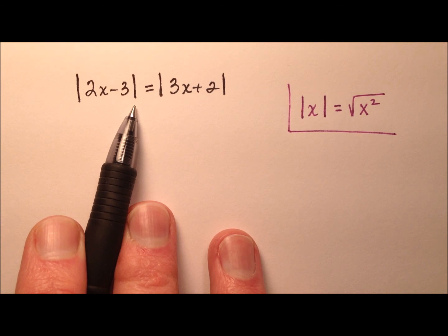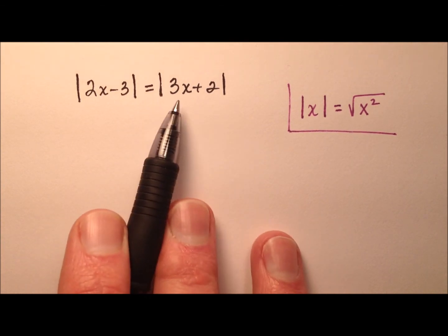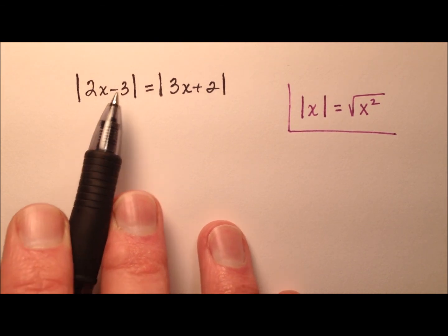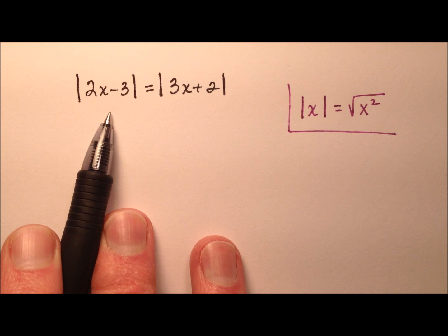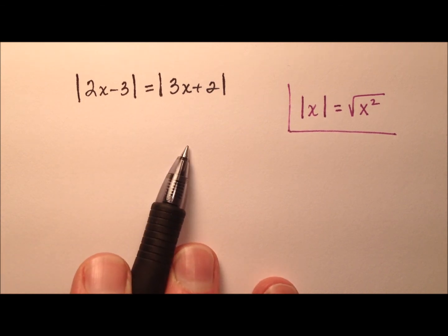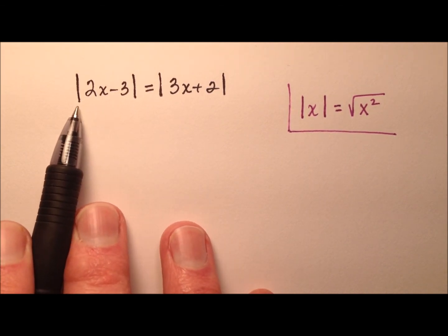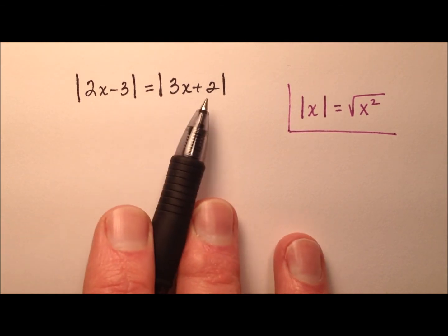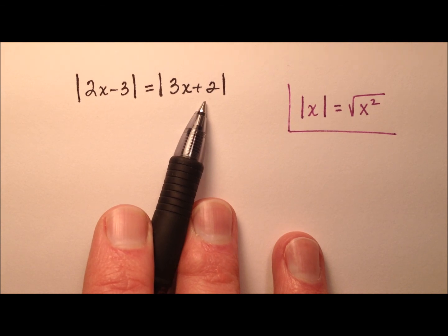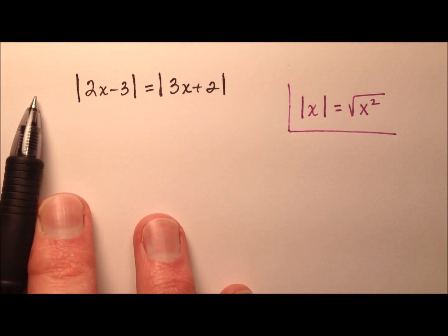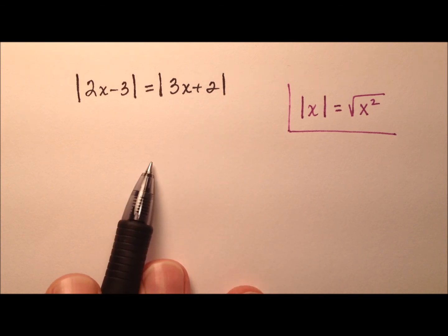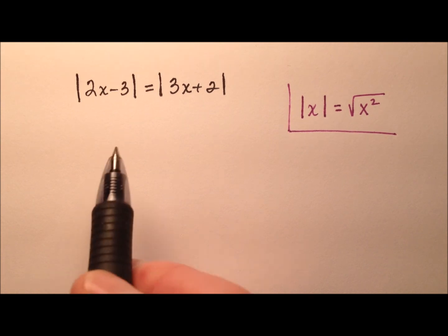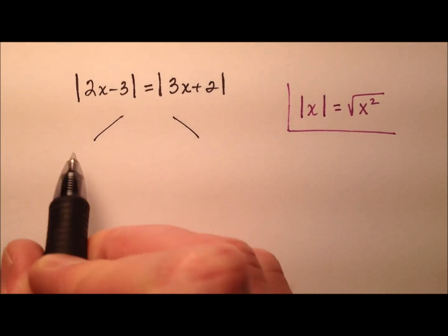We have the absolute value of 2x minus 3, and that equals the absolute value of 3x plus 2. When solving absolute value equations normally, we have to isolate the absolute value expression and then break it up into two separate equations — one for the positive and one for the negative. This is probably the most basic form of a dual absolute value equation because there are no values outside the absolute values, no variables and no numbers. It's just strictly an absolute value equaling another absolute value. So I only need to break this up into two different cases.